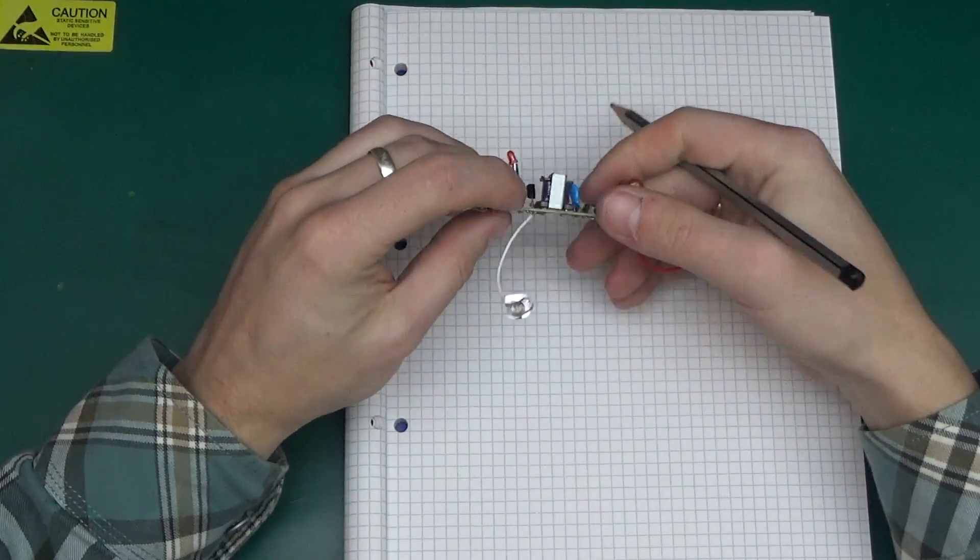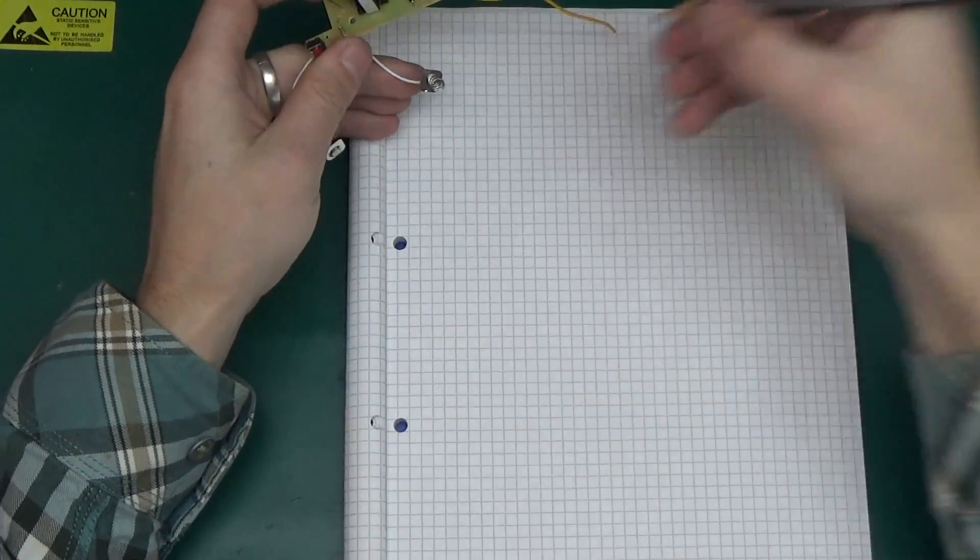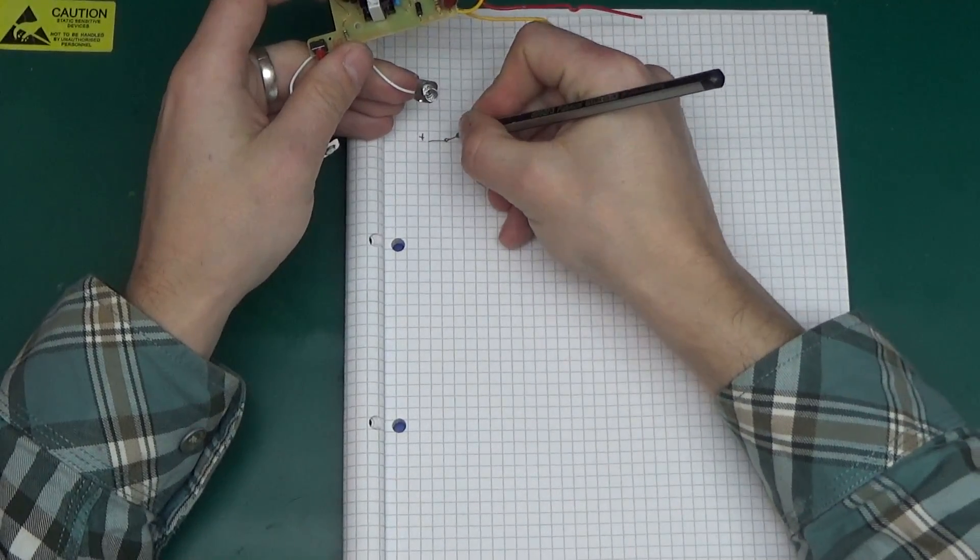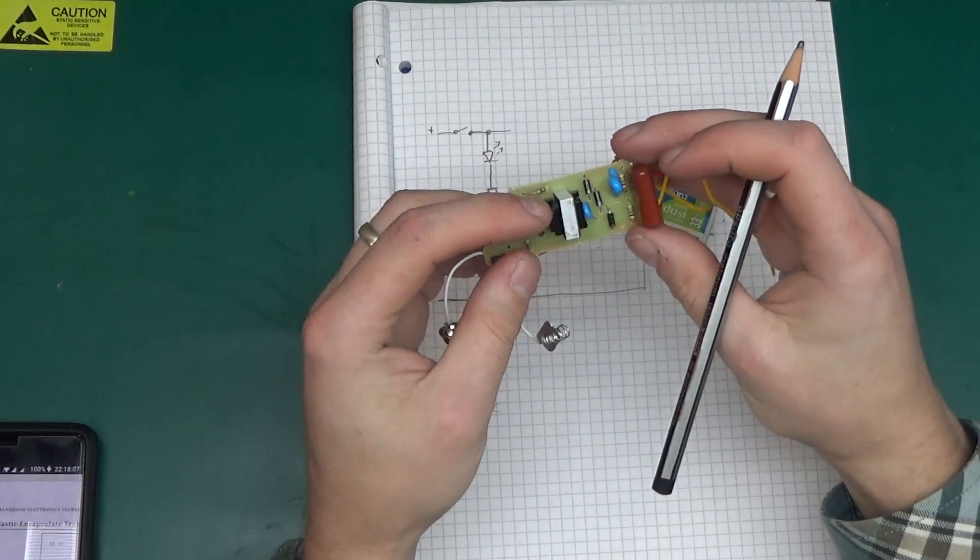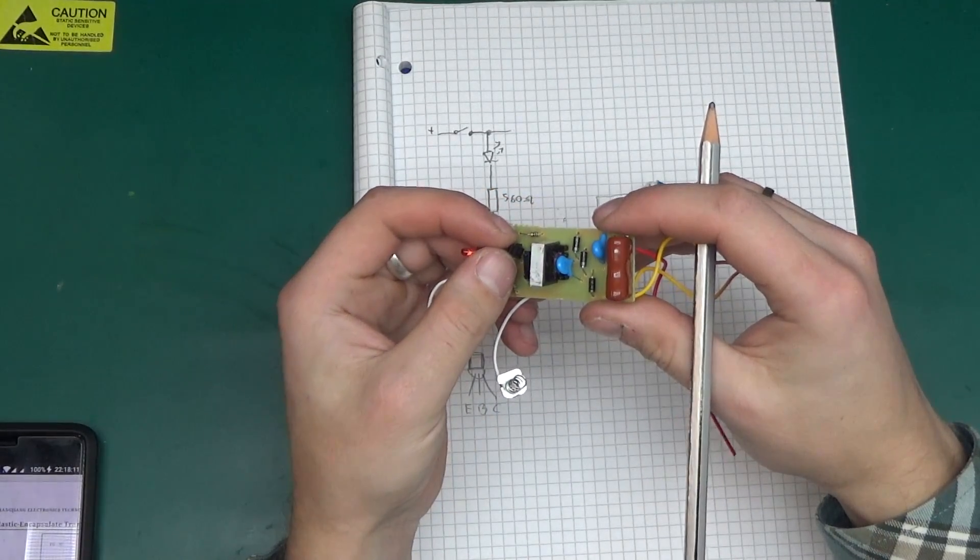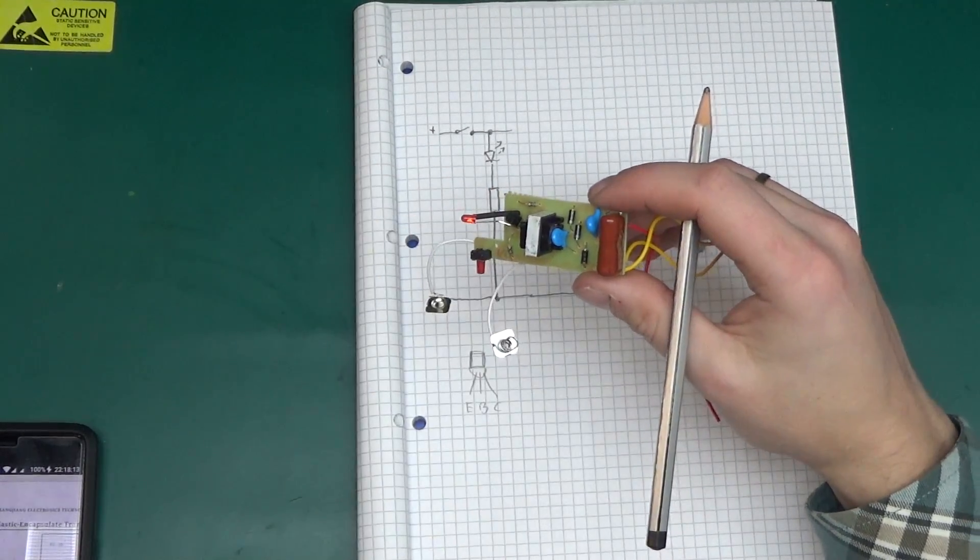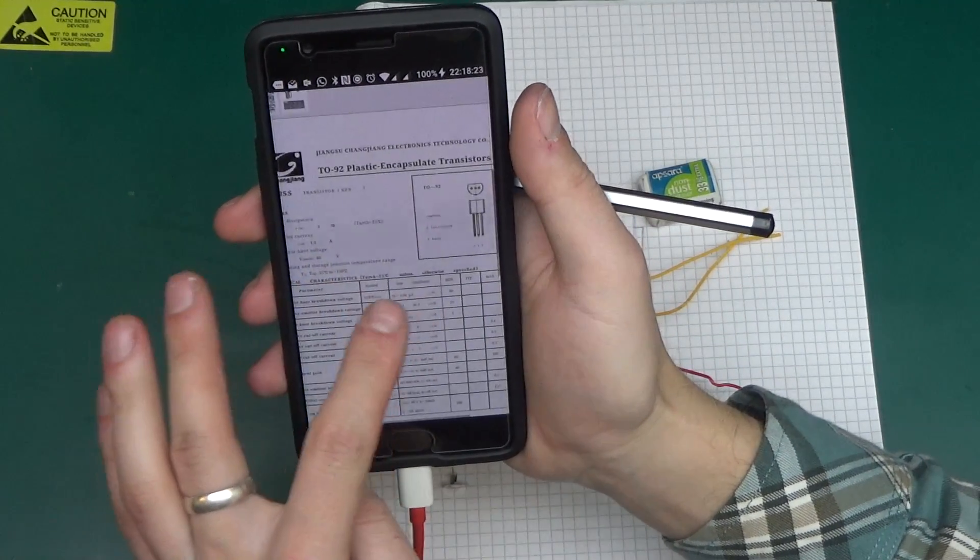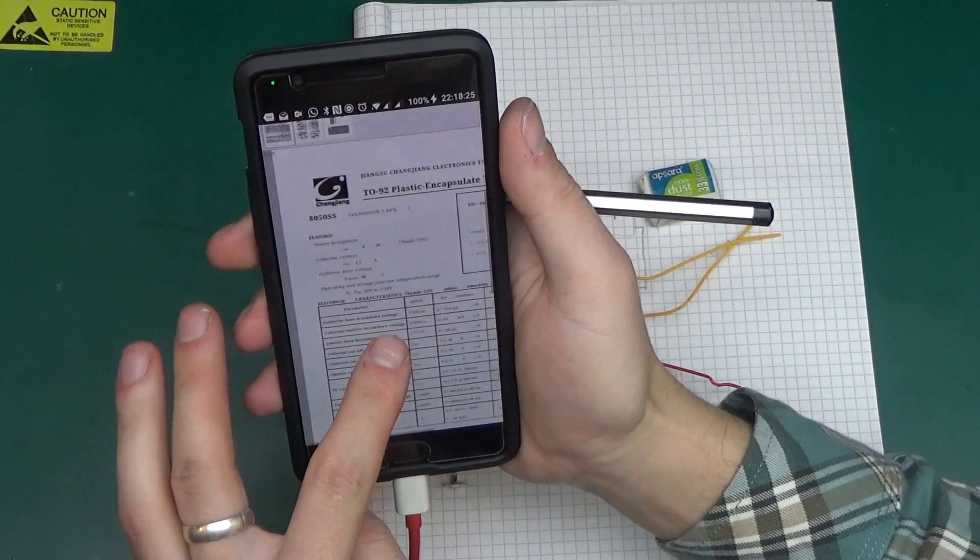Positive goes to the switch. Let's start drawing this. So we've got positive that goes to a switch. The switching device has marking 8050SS, which brings a datasheet for Jiangsu Changjiang Electronics Company.